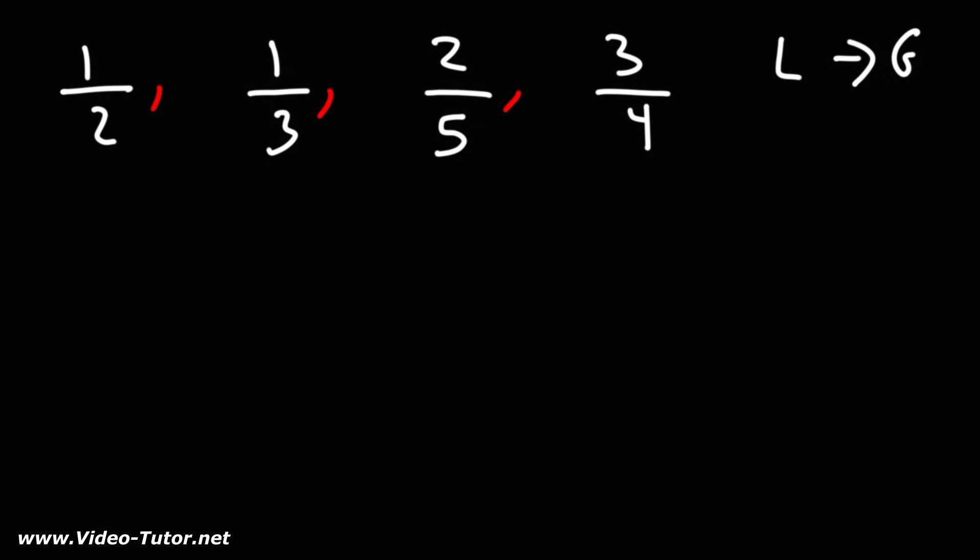The easiest way to do this is to get common denominators and then we could compare the numerators of each fraction. But what's a common multiple of 2, 3, 5, and 4?